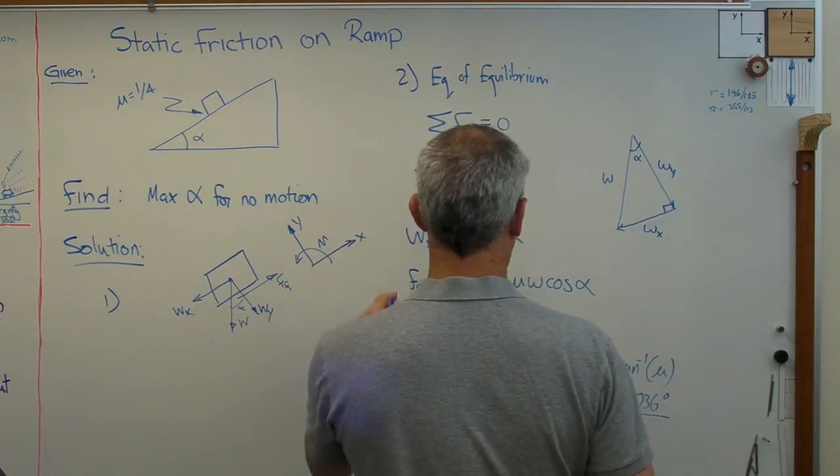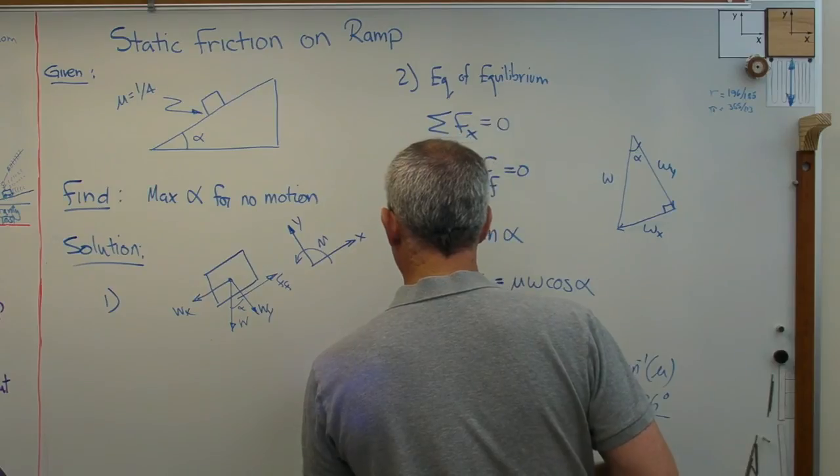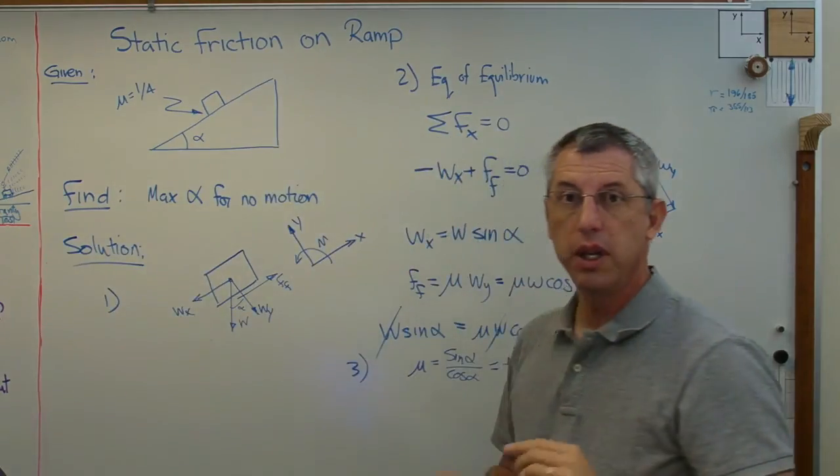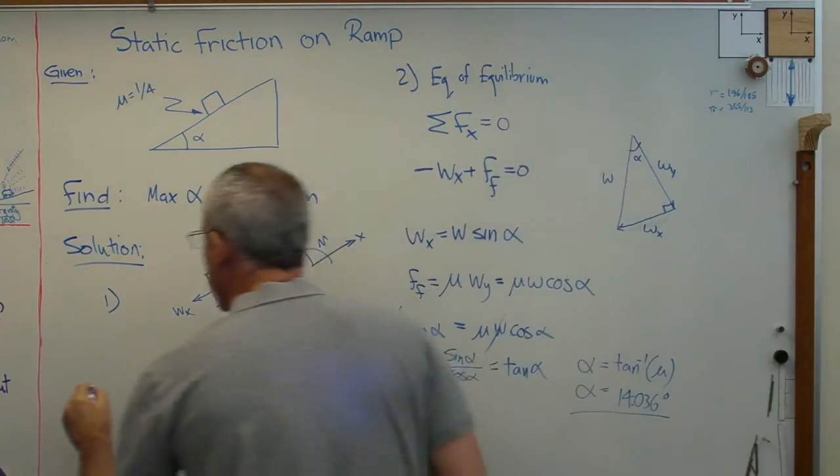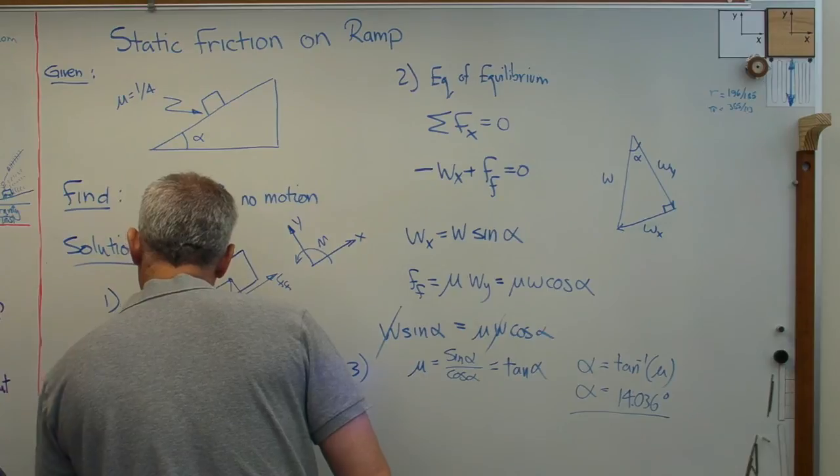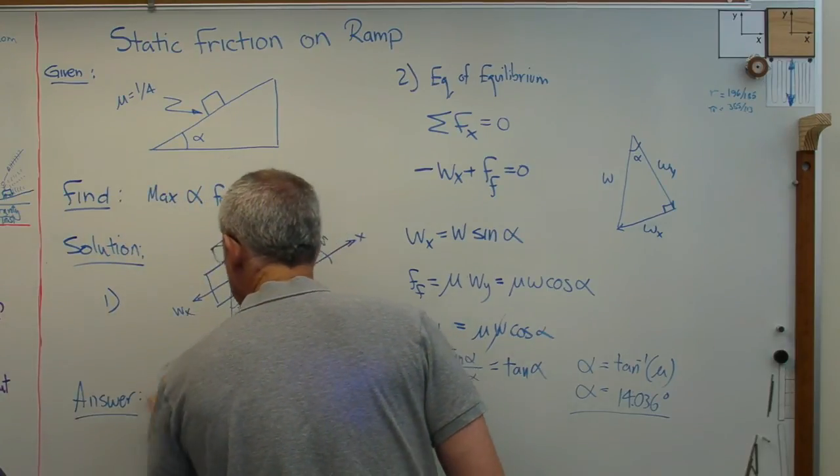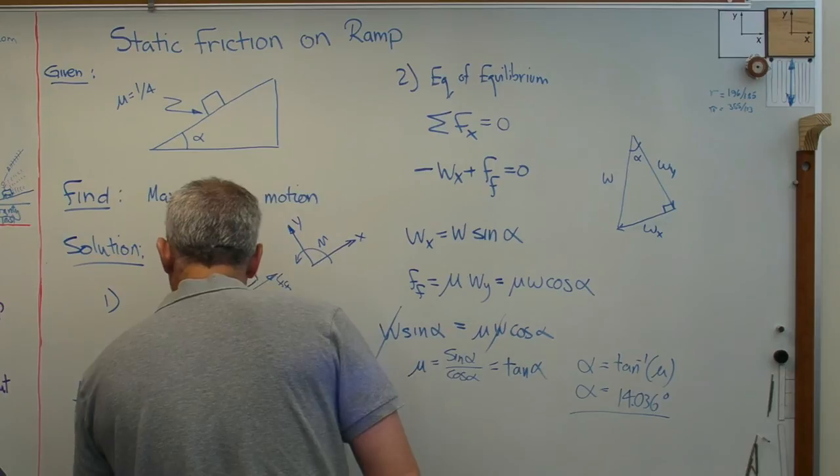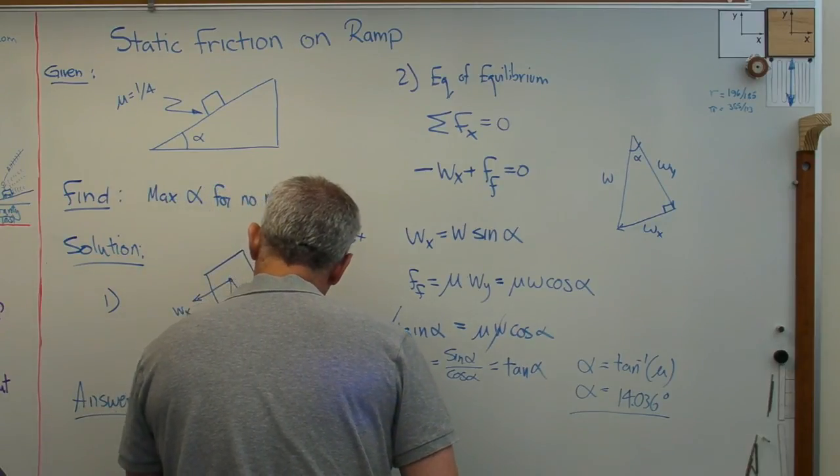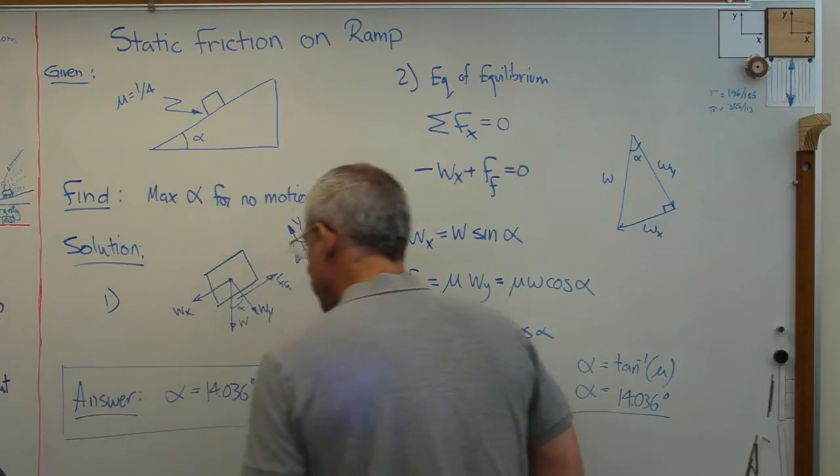All right. Let's call that three right here because we actually calculated a number. So given and find solution. I've got to have an answer. So I'm going to write answer down here. And that's going to be, whoops, alpha equals 14.036 degrees. There you go.